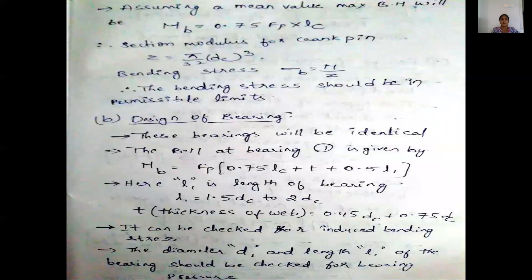Next, you find the maximum bending moment — the bearings will be identical and bending moment at bearing 1 is given by Mb equal to Fp into 0.75 Lc. Then you find the section modulus for crankshaft: Z is equal to π by 32 dc cubed. After that, you find the bending stress sigma B equal to M by Z.